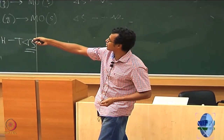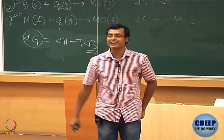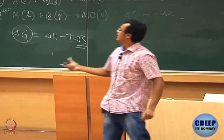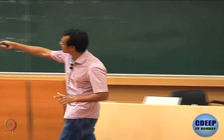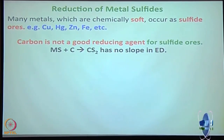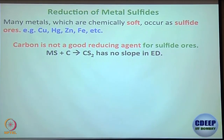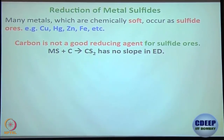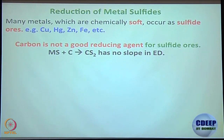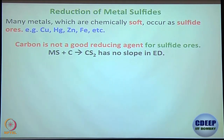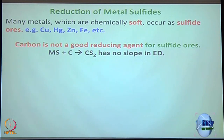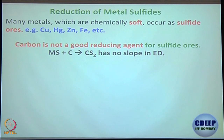Copper, mercury, zinc, and iron are examples of metals that can give sulphide forms in the ore. The reason we cannot utilize carbon directly with metal sulphide is that carbon disulphide formation has almost no negative slope in the Ellingham diagram — it is nearly constant — unlike carbon going to carbon monoxide, which runs steeply downward.